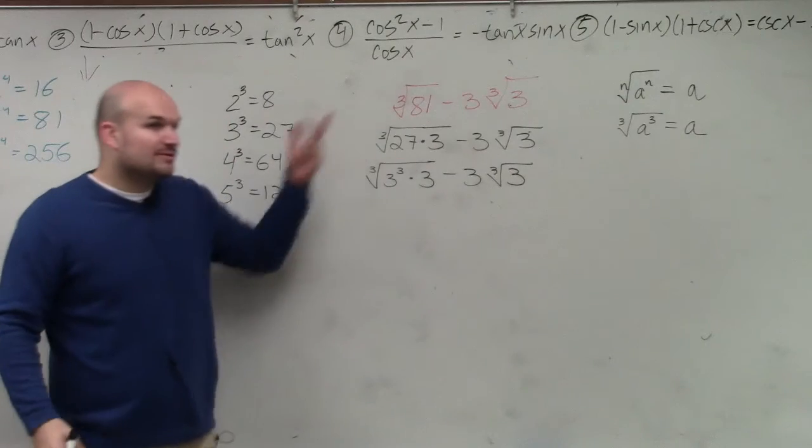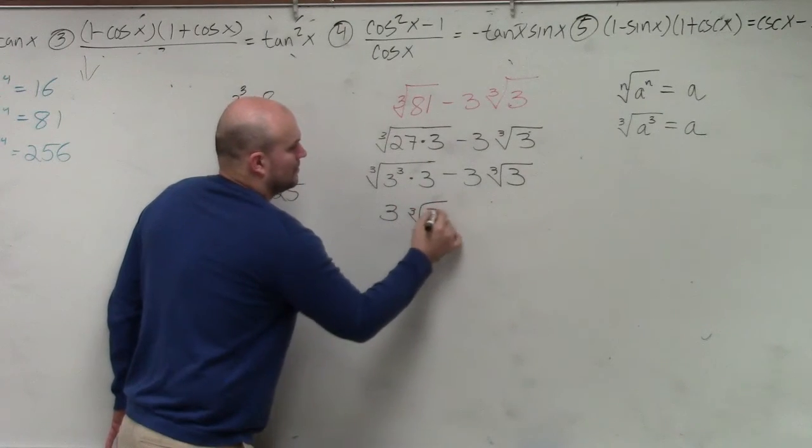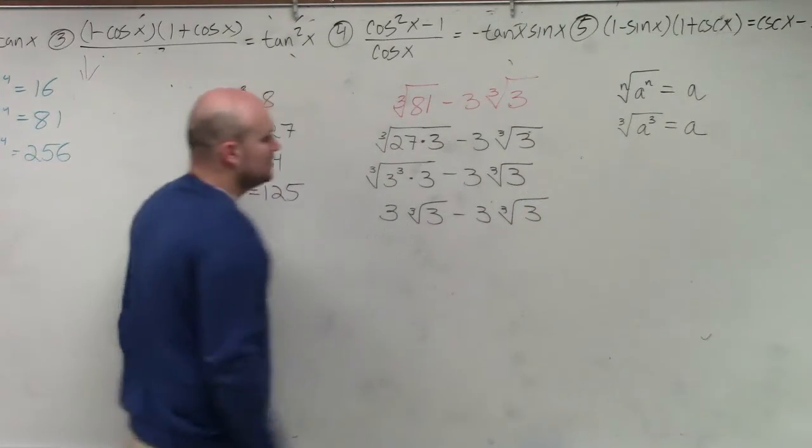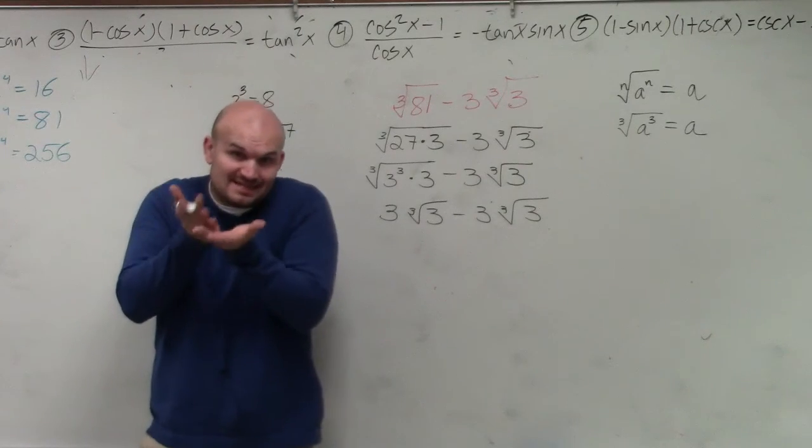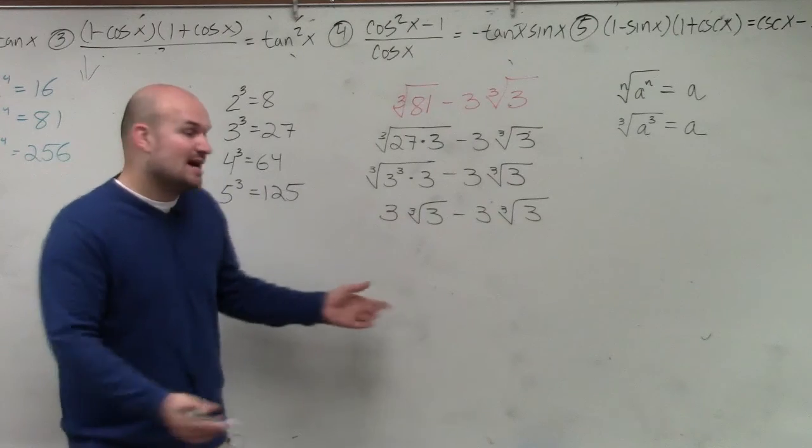Now, what's the cube root of 3 cubed? 3. Minus 3 cube root of 3. So remember our rule: when we have the exact same index and the exact same radicands, then we can subtract the numbers in front.